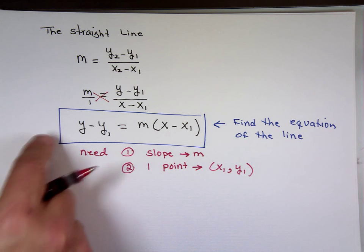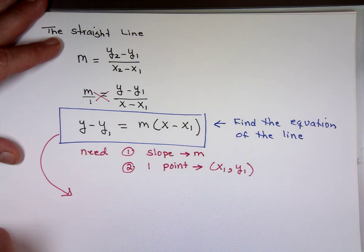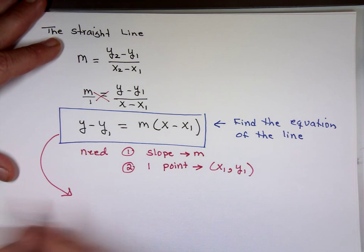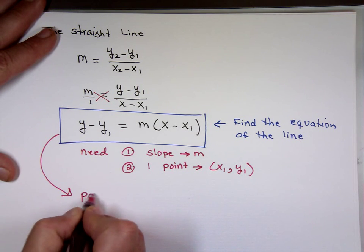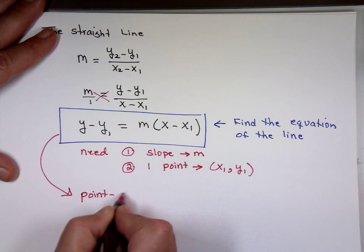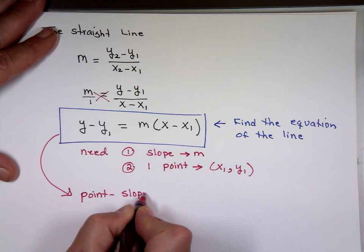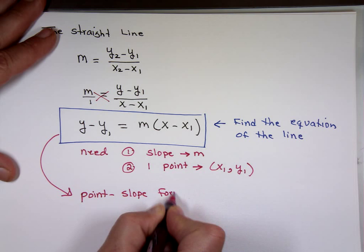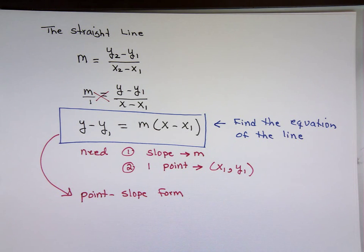What is the name of this equation? It's called the point-slope form. When they say put the answer in point-slope form, that's the form they want you to leave it in.